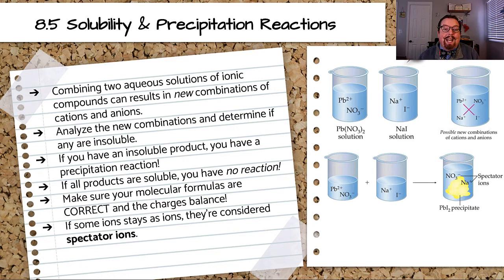For example, if I mix lead nitrate with sodium iodide, I can see in my resulting solution that I now could have lead ions forming ionic attractions to iodide ions, and sodium with nitrate. Those are my two new combinations that I couldn't have before these two solutions were mixed.